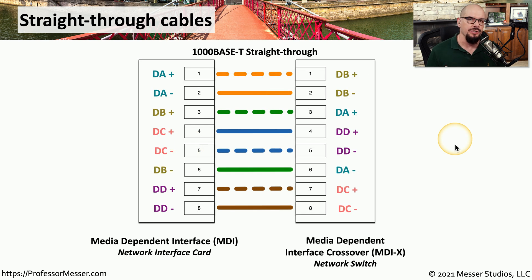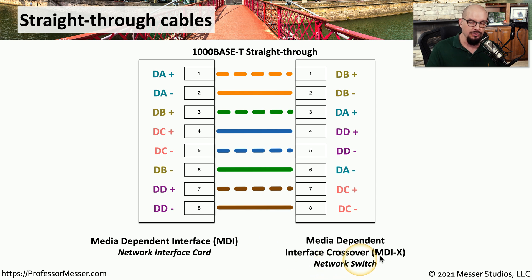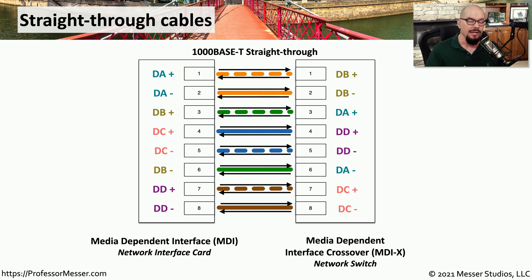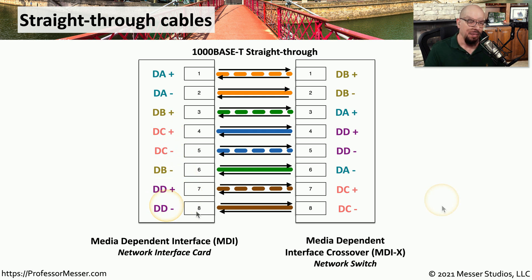This traffic flow changes when we get into gigabit networking and higher. With a gigabit straight-through or 1000BASE-T connection between a network interface card (MDI) and a network switch (MDIX), there is no longer a distinct transmit and receive side. With gigabit communication, there is both transmit and receive on every single wire used, and we're using all four pairs of wires in a single ethernet cable. The pairs are labeled data A, data B, data C, and data D, which is why all eight wires must be connected on both sides of the cable.